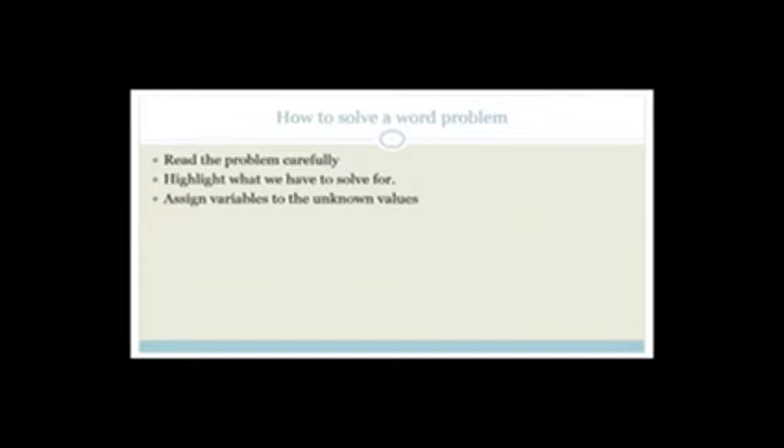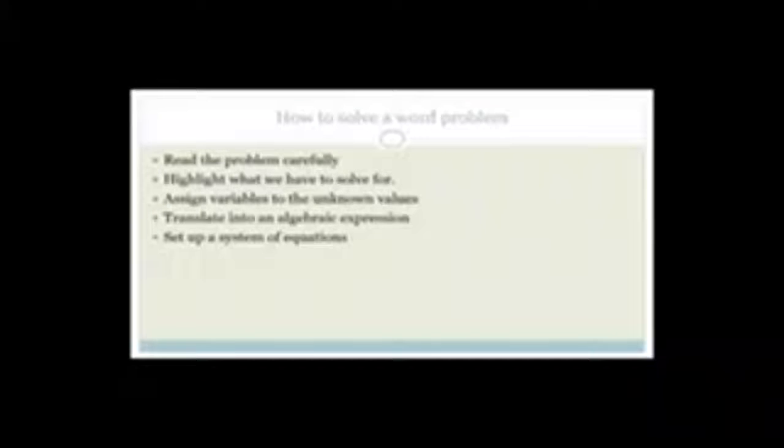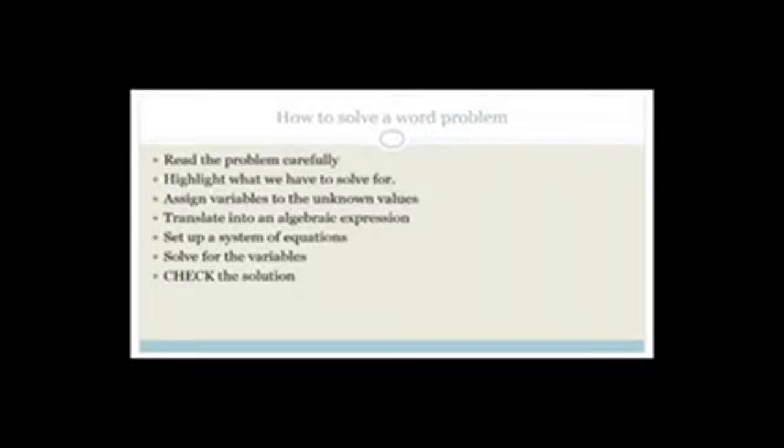Assign variables to unknown values. So you're going to let something be X or let something be Y. Then translate it into algebraic expressions. For example, X plus Y equals 3. We'll work through these examples now. Set up a system of equations and then solve, and then obviously you always check your solution. Always check your solution, just even if it's just to make sure that it makes sense. And then obviously you write down the final answer.